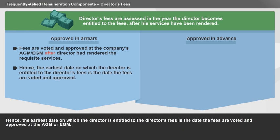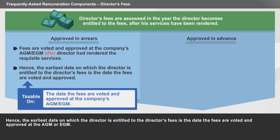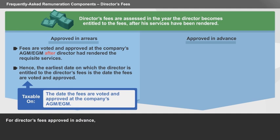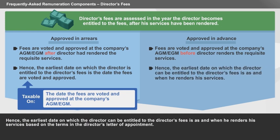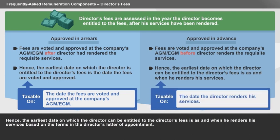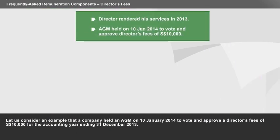Hence, the earliest date on which the director is entitled to the director's fees is the date the fees are voted and approved at the AGM or EGM. For director's fees approved in advance, the fees are voted and approved at the company's AGM or EGM before the director renders the requisite services for the accounting year concerned. Hence, the earliest date on which the director can be entitled to the director's fees is as and when he renders his services based on the terms in the director's letter of appointment.